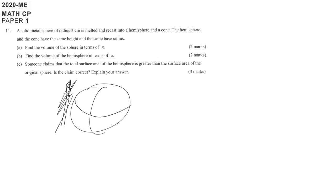So I'm talking about a sphere with radius 3, and then it's melted because the volume should equal to the total volume of another item. Melted and recast to a hemisphere with a cone. So a hemisphere and also a cone.